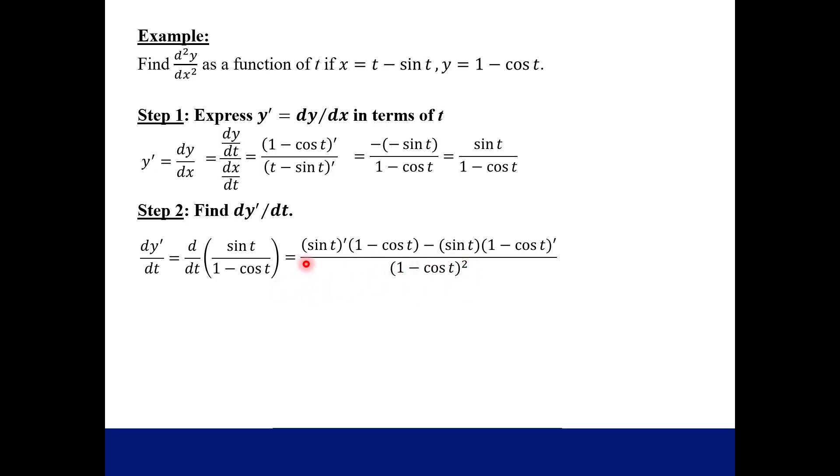And then the derivative of sine is cosine t, and over here, this derivative is going to be sine t. So we have cosine t times this quantity minus sine t times itself all over the bottom squared. And then if we just simplify a little bit, let's distribute this cosine t.